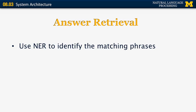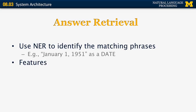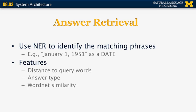In answer retrieval, we use standard named entity recognition systems to identify matching phrases — for example, labeling 'January 1, 1951' as a date. Features used in answer retrieval include the distance to the query word: if the author's name is listed within one or two words of the book's name, that's better than if it's 10 or 20 words away. We also look at the answer type matching the question, WordNet similarity (e.g., getting 'person' or 'writer' instead of 'author'), and redundancy — words appearing multiple times in the answer set are more likely to be correct.